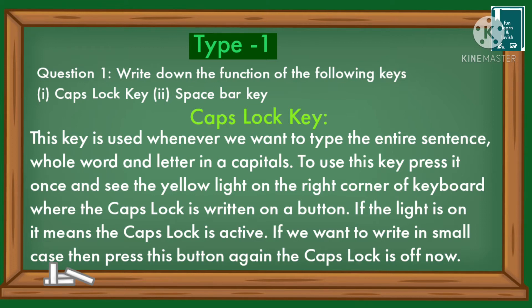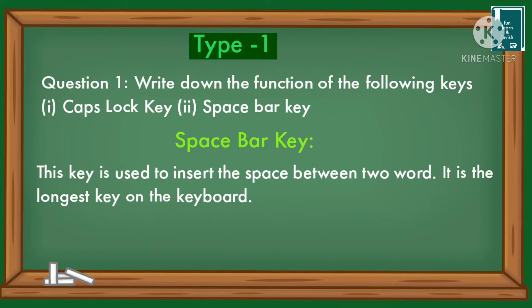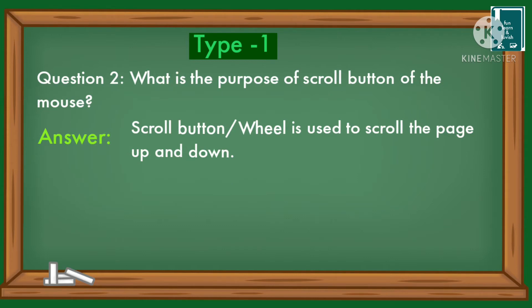If we want to write in small case, press this button again — the Caps Lock is off. Spacebar key: This key is used to insert a space between two words. It is the longest key on the keyboard. Question 2: What is the purpose of the scroll button of the mouse?